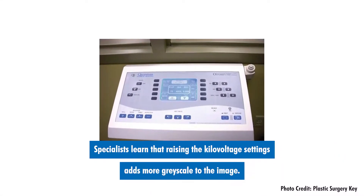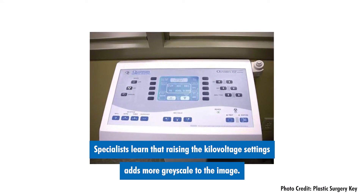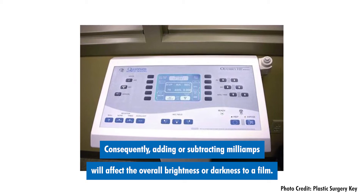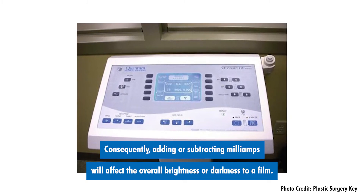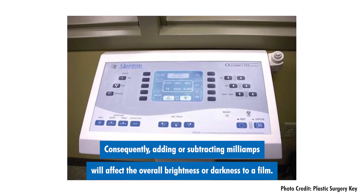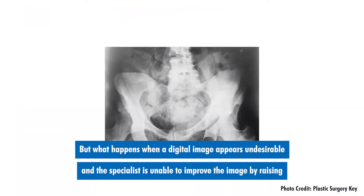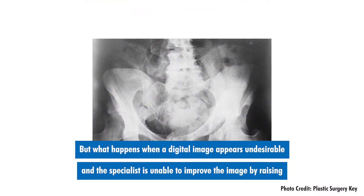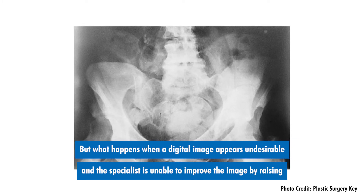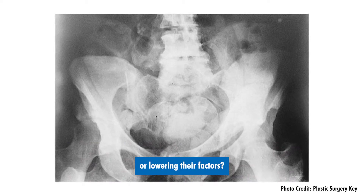Specialists learn that raising the kilovoltage settings adds more grayscale to the image. Consequently, adding or subtracting milliamps will affect the overall brightness or darkness to a film. But what happens when a digital image appears undesirable and the specialist is unable to improve the image by raising or lowering their factors?